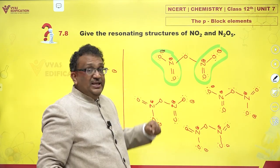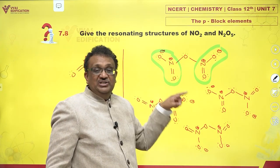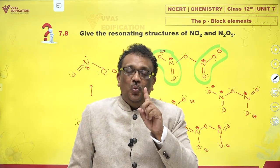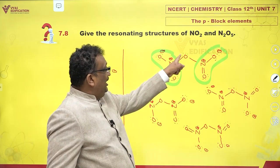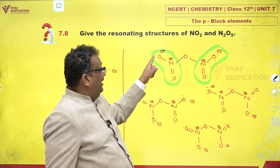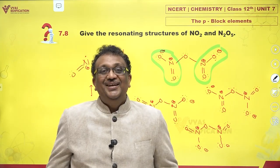And bond order of these NO bonds is 1.5 each. And bridging NO bonds have simply bond order 1. So there are two types of bonds with N and oxygen. Single bonds with bridging. And 1.5 is the bond order with the terminal oxygen atoms.